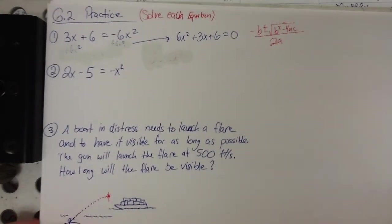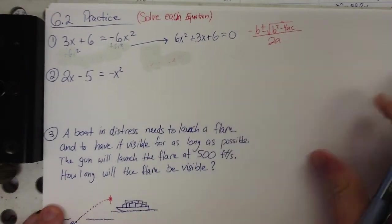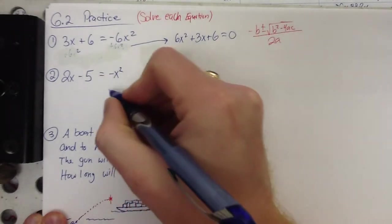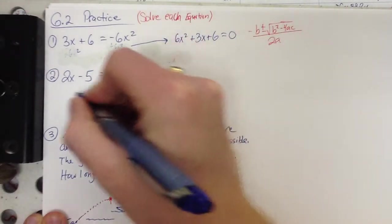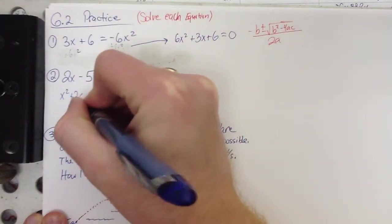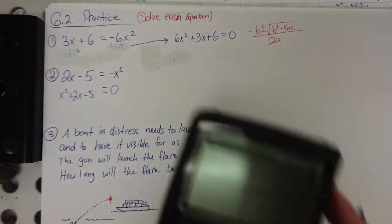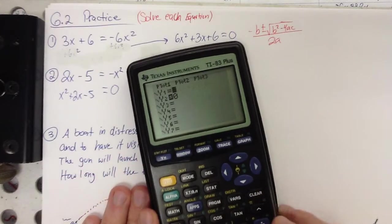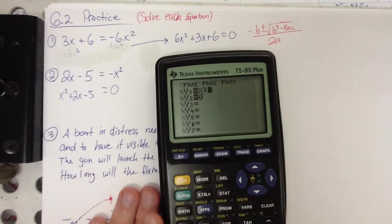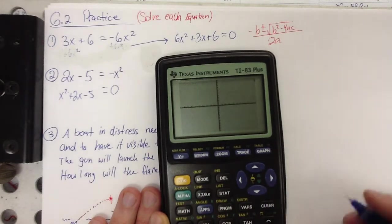Alright, so number 2. 2x minus 5 equals x squared. I really want you to practice making this equal to 0. So, I'm making you do the same thing again. So, I'm adding x squared, and now I have to put that in the calculator. So, x squared plus 2x minus 5. Graph it.